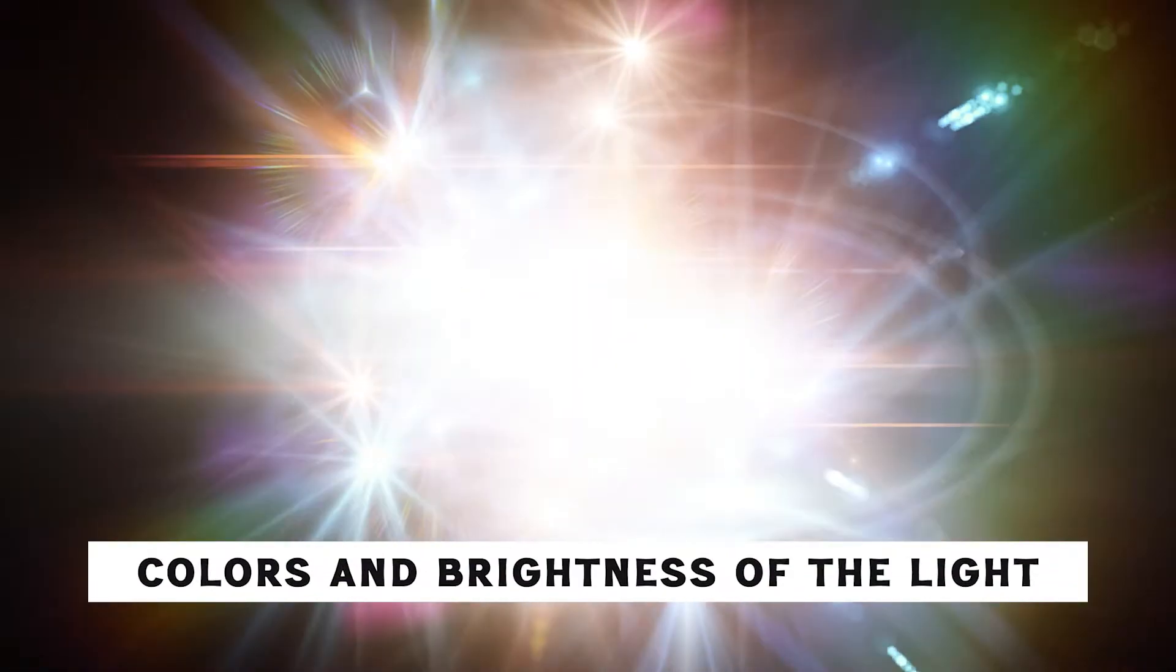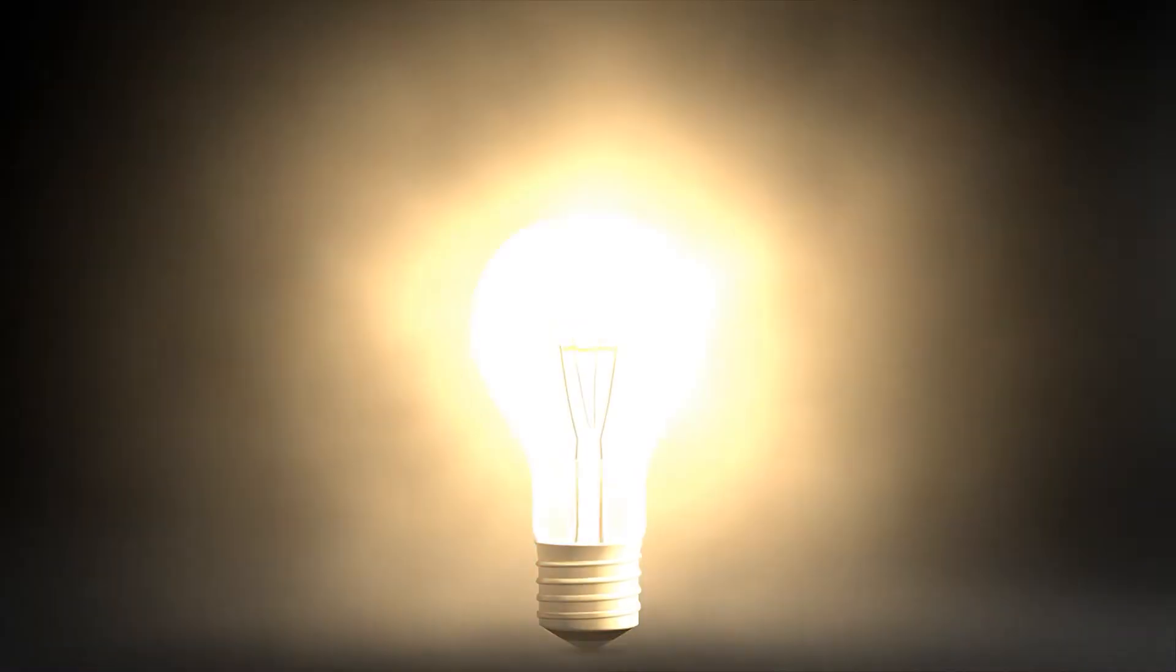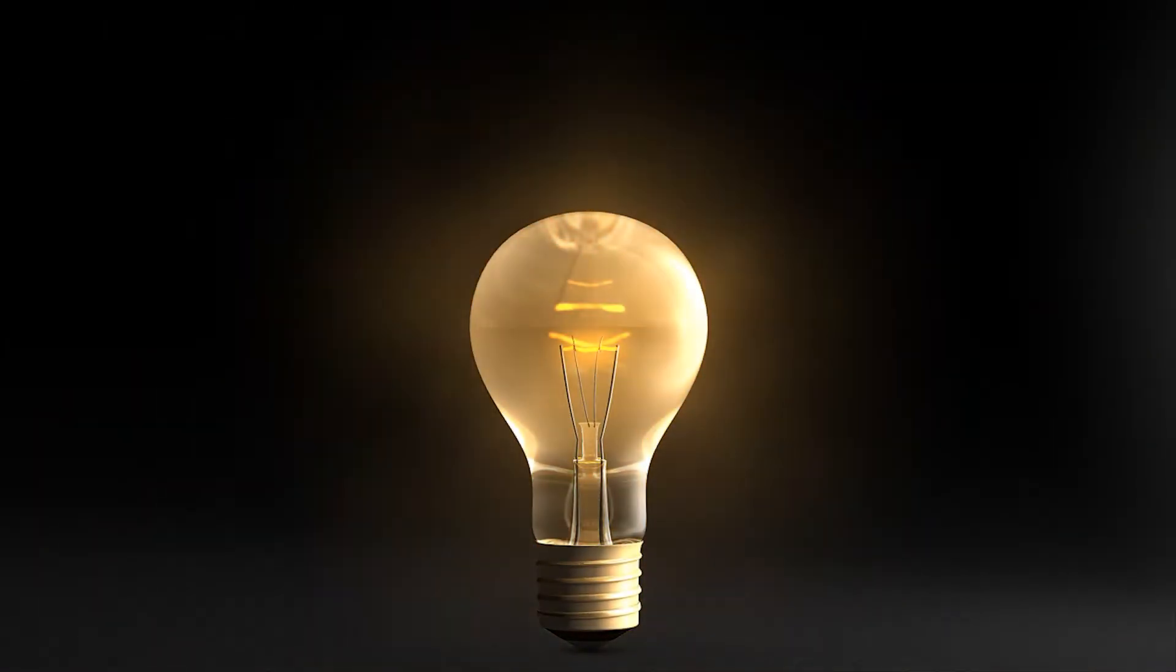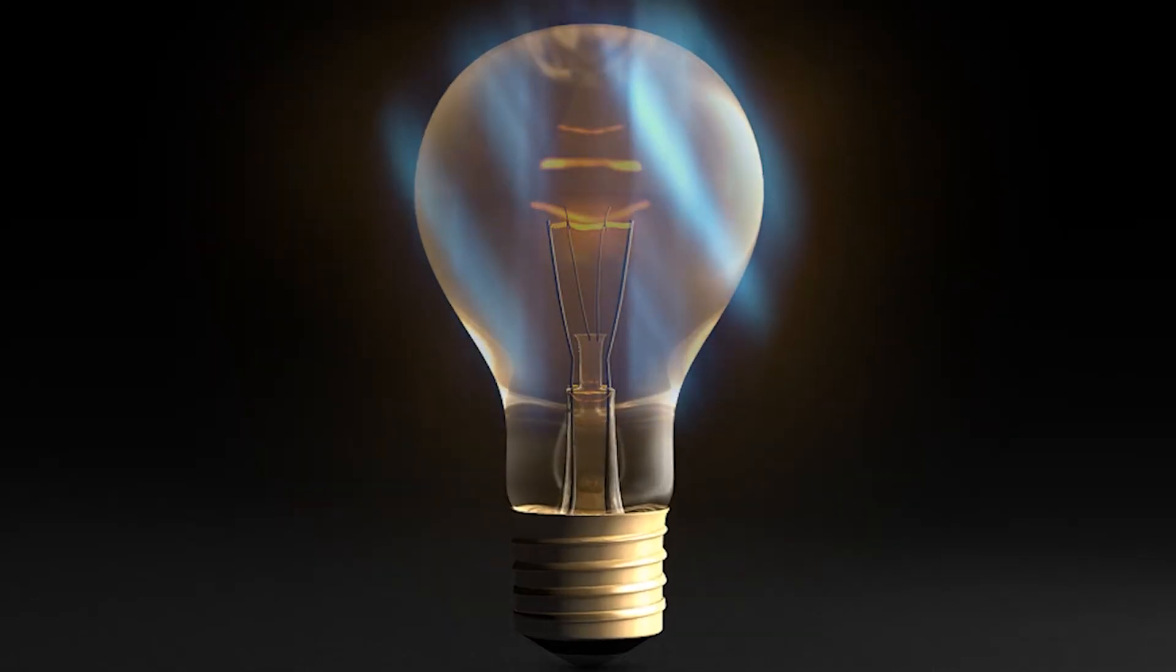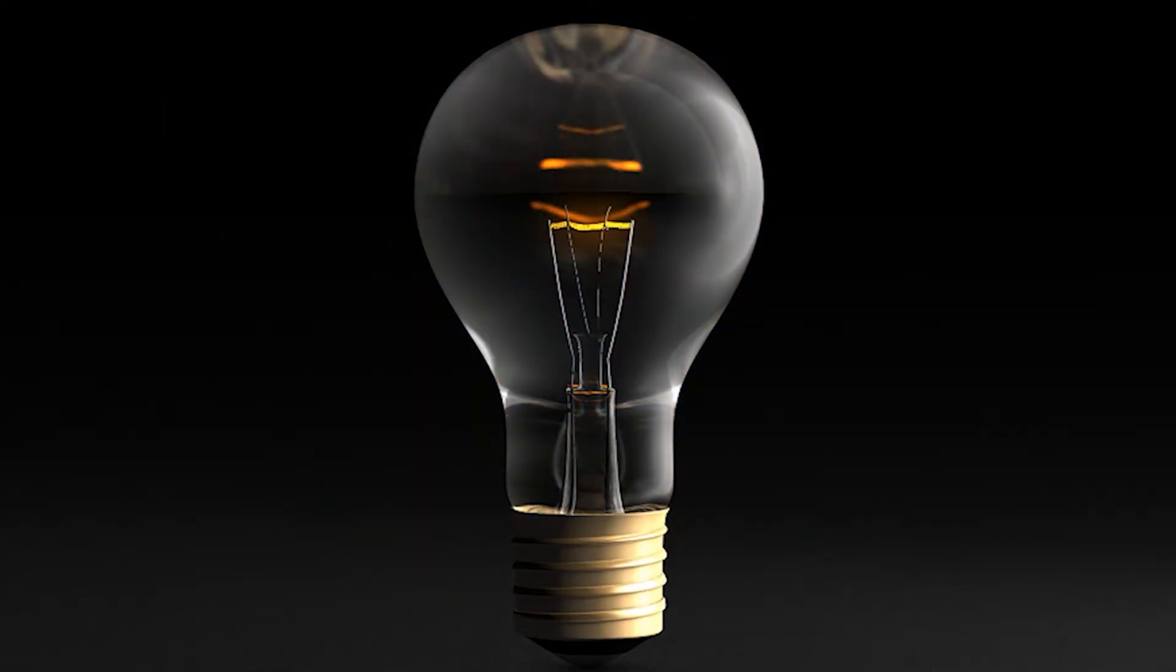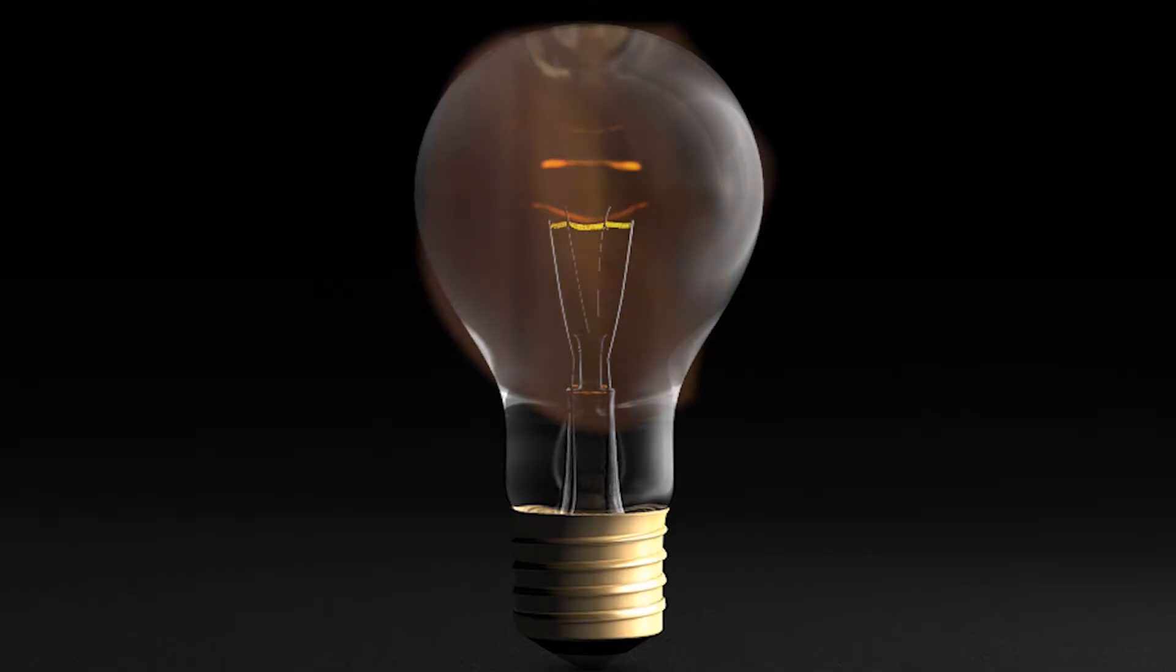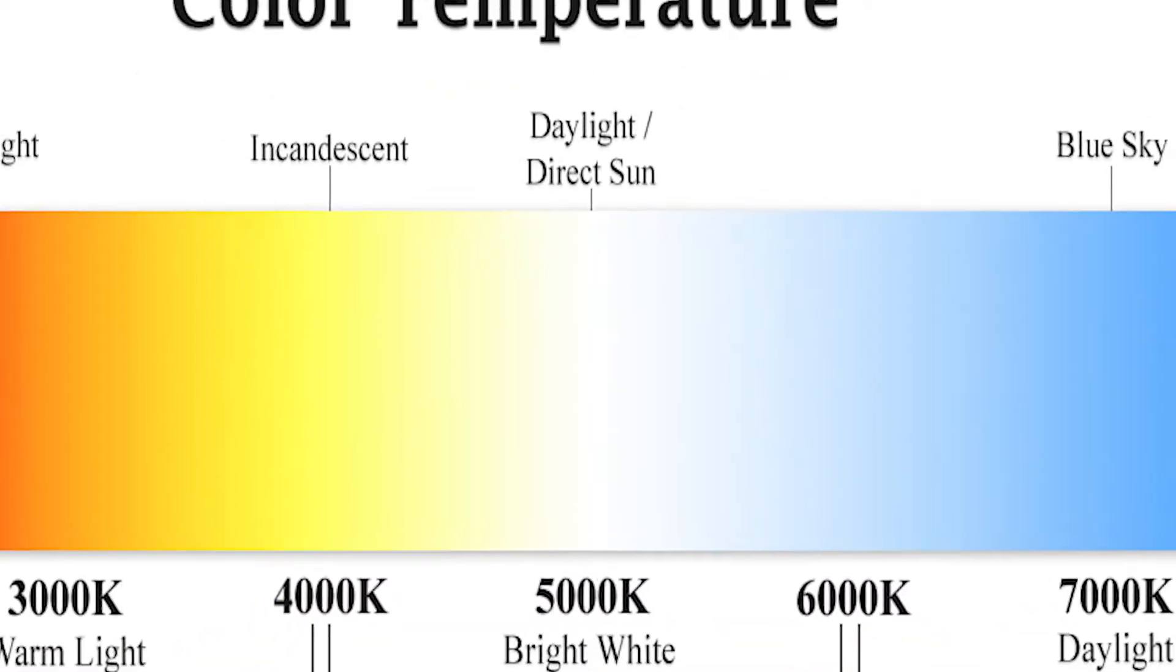Now, let's talk about the colors and brightness of the light. The color of the light produced depends on how hot the filament gets. If it's super hot, it emits bluish white light. If it's not as hot, it gives off a warmer, yellowish light. This is what we call color temperature.